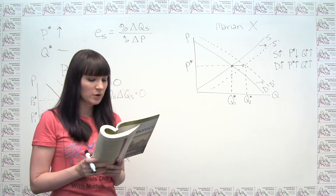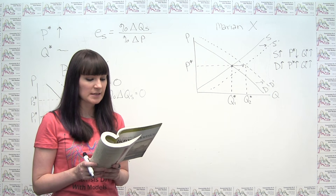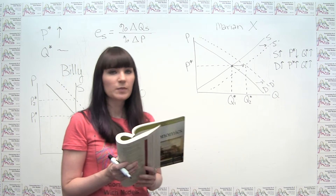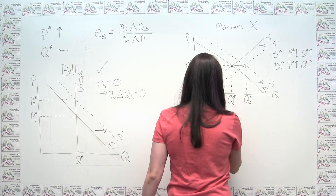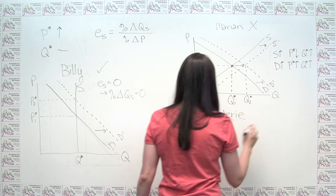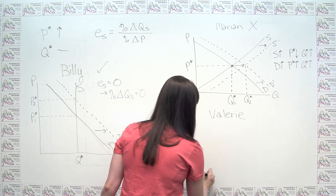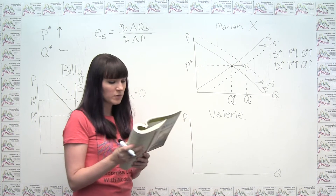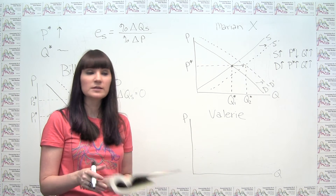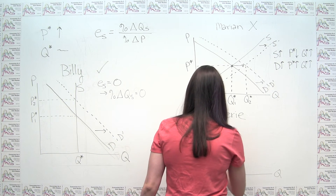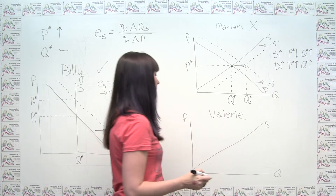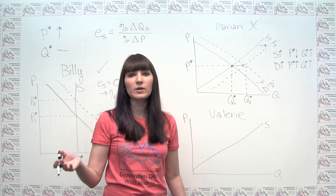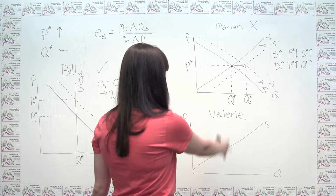Our third scenario is from Valerie. Her hypothesis is that supply decreased, but demand was totally inelastic. We need to think about what that looks like, starting with a supply and demand diagram — quantity on the horizontal axis, price on the vertical axis. We weren't told anything about supply other than it decreased, so we draw a normal upward-sloping supply curve.